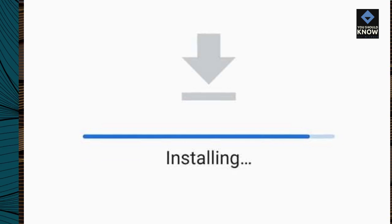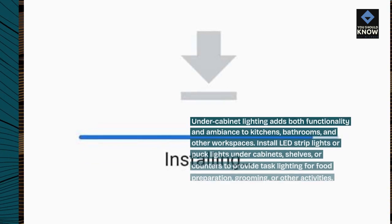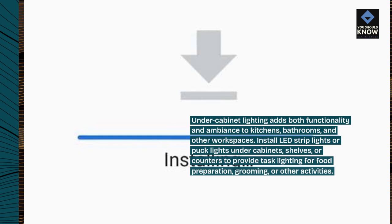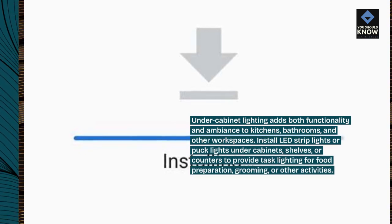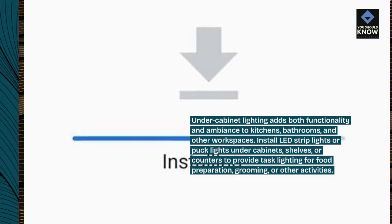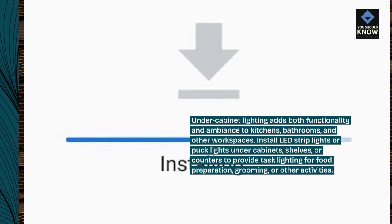Under cabinet lighting adds both functionality and ambiance to kitchens, bathrooms, and other workspaces. Install LED strip lights or puck lights under cabinets, shelves, or counters to provide task lighting for food preparation, grooming, or other activities.